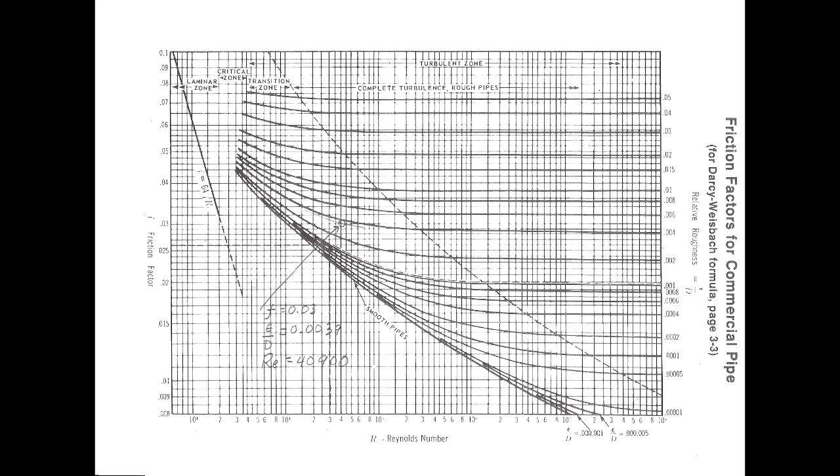You'll notice that as the Reynolds number increases, the lines get flat. This means that the friction parameter becomes dependent on the pipe roughness and not the Reynolds number. This is a transition zone known as complete turbulence. This means that the first term within the brackets of the Colebrook equation is predominant.